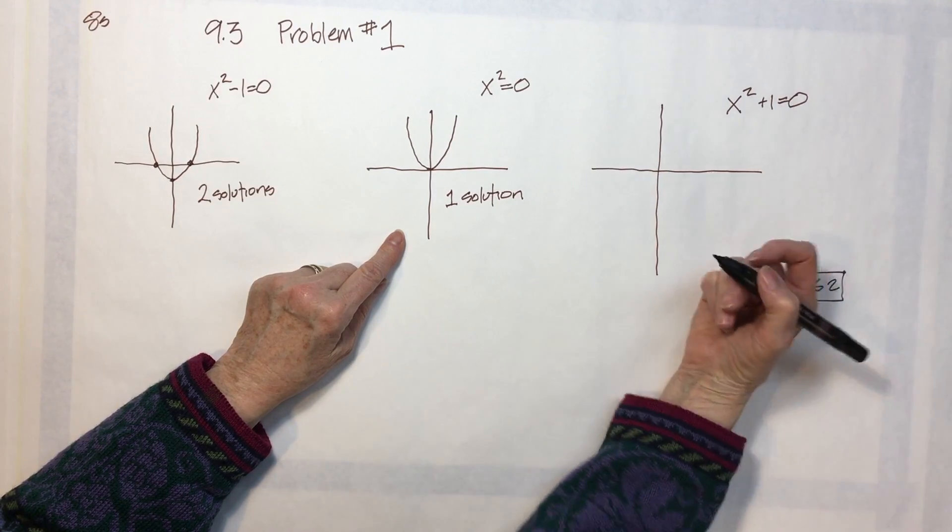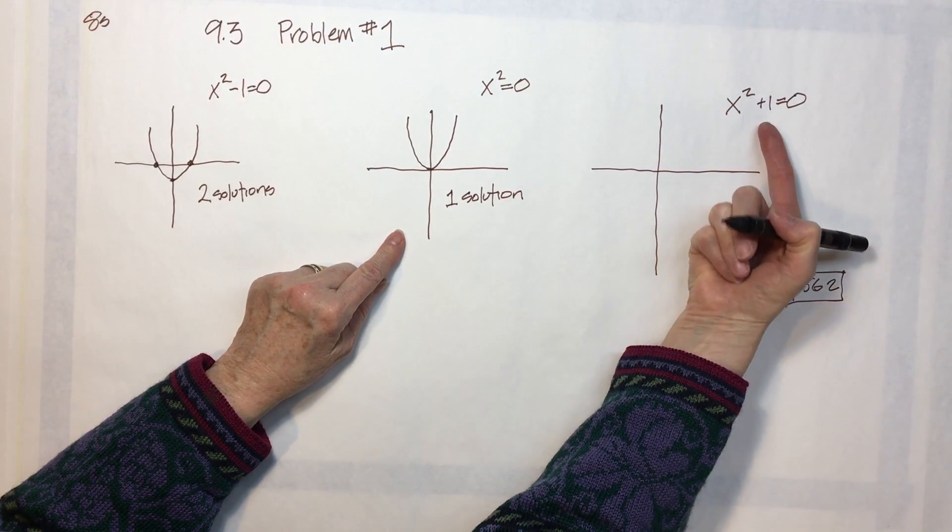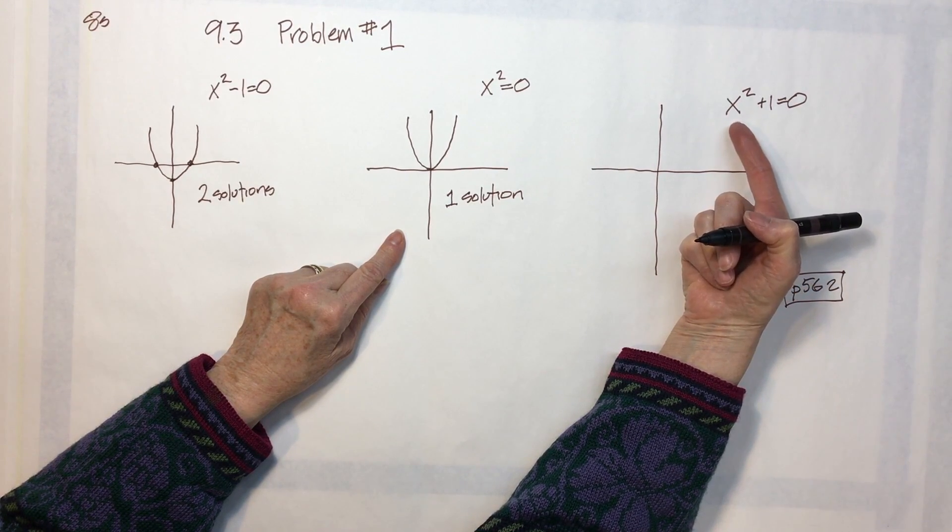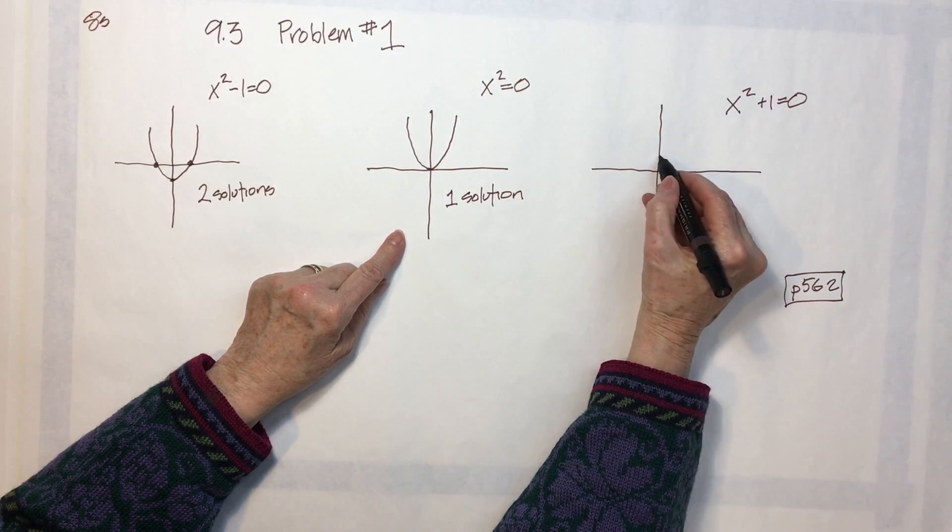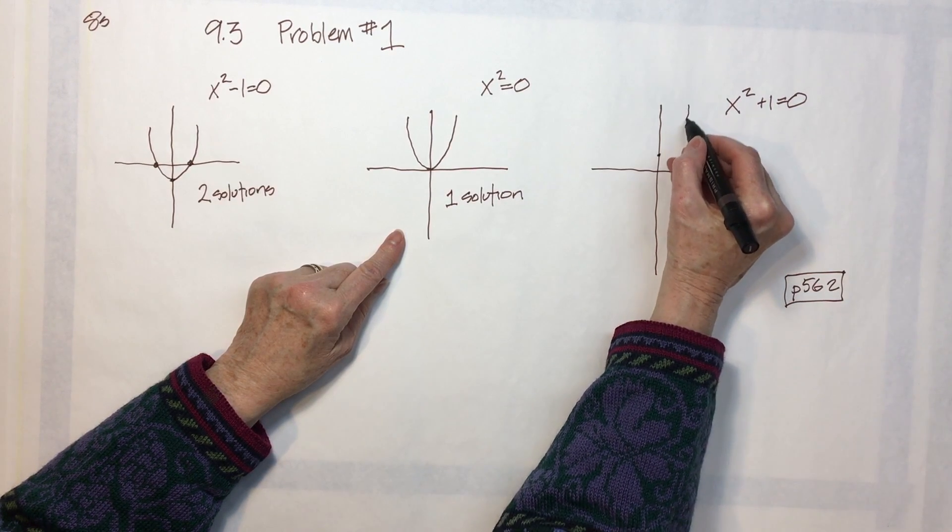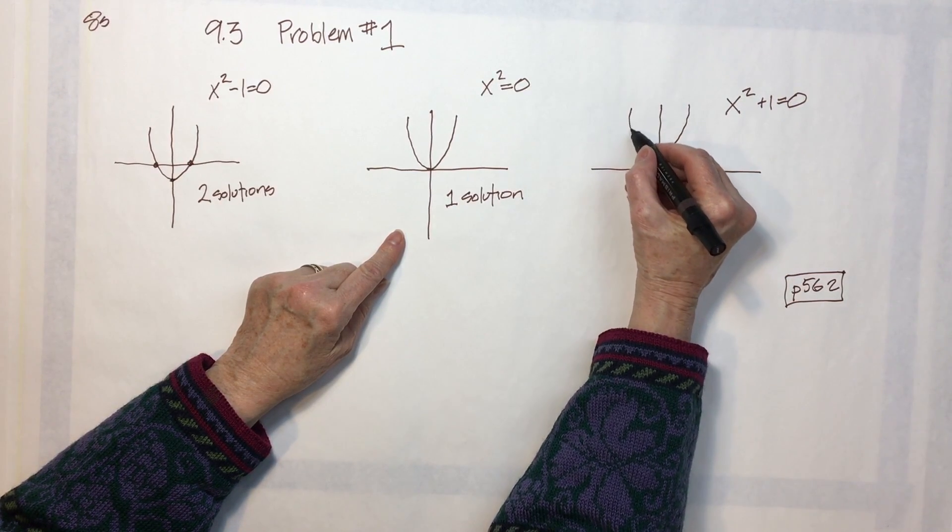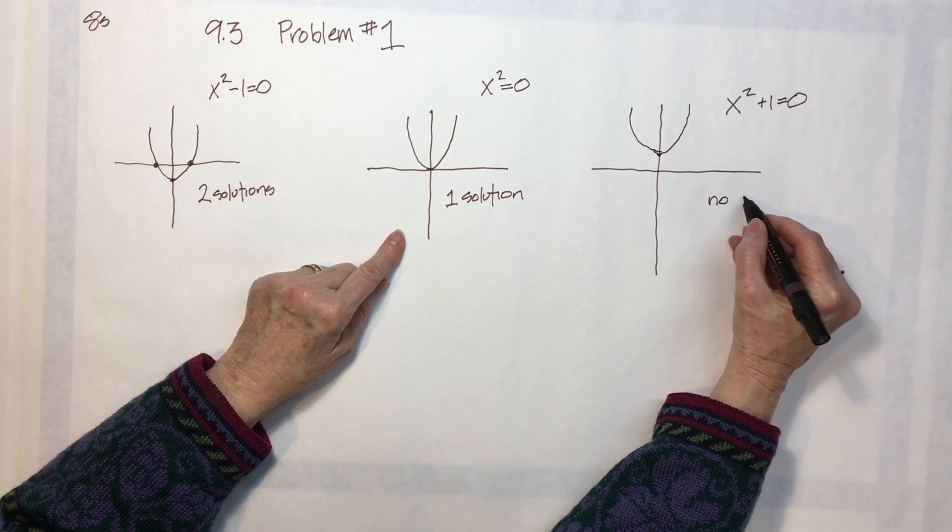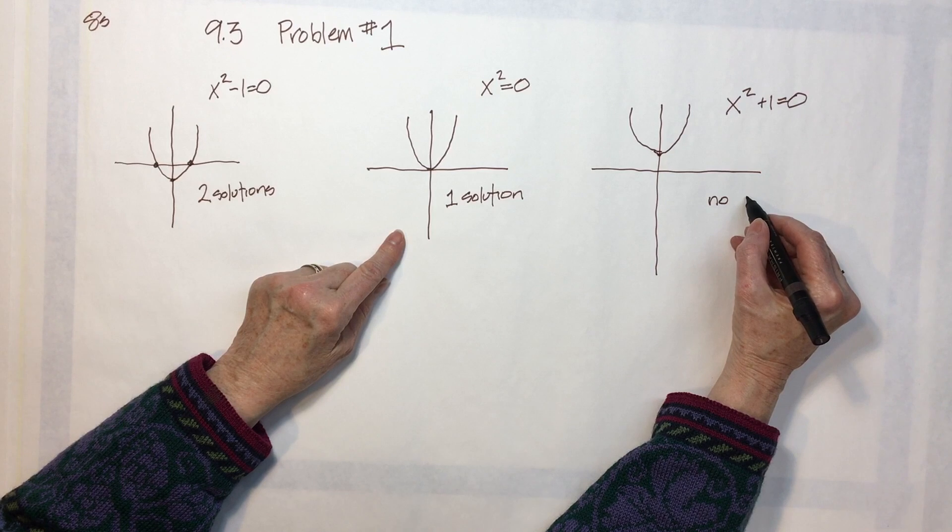Over here, there is a c again, and still no bx. We see that it is positive, so it's going to start here and it's going to go up. It has no solutions because it doesn't cross the x-axis.